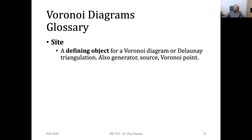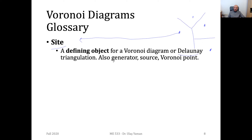Now let's look at the formal definitions. I will quickly draw a Voronoi diagram composed of several Voronoi sites. This is the Voronoi diagram and these dots are the sites — the defining objects for the Voronoi diagram. It is somehow related to a special triangulation called Delaunay triangulation. We prefer to use the terms Voronoi site, generator, source, or Voronoi point — they all refer to the points responsible for generating the cells in the Voronoi diagram.